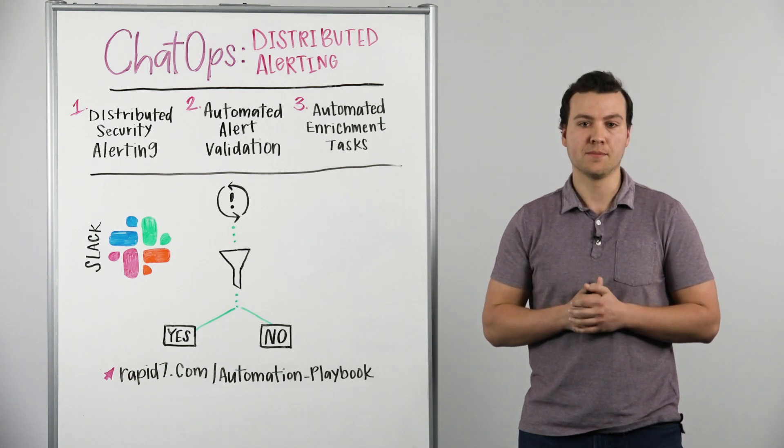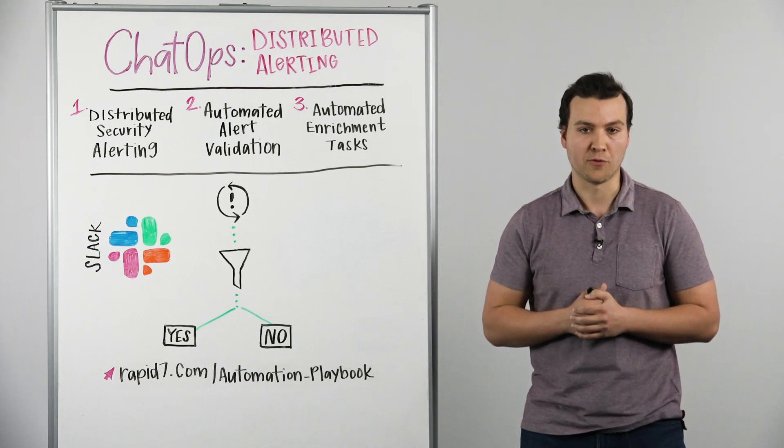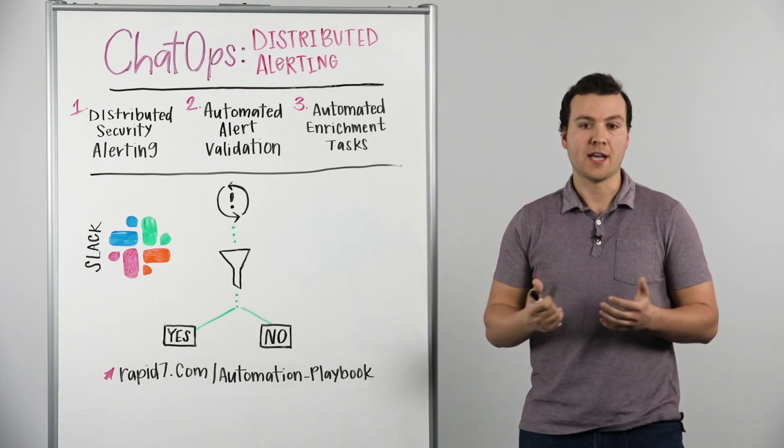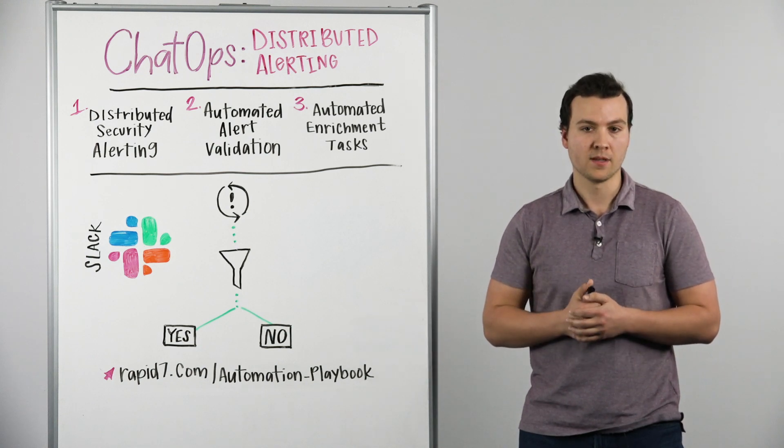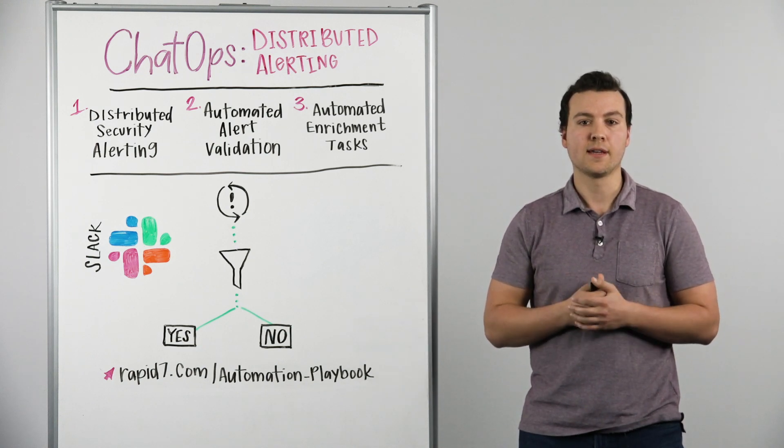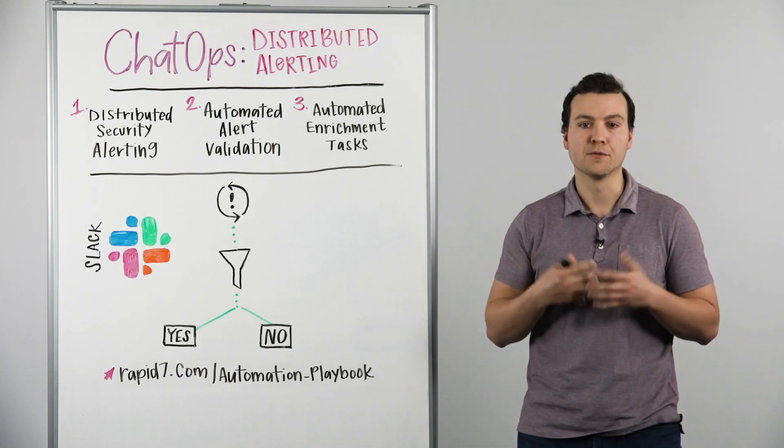Let's imagine an alert comes in during off hours that a user is accessing a system that they've never logged into before. With automation-powered ChatOps, that user can be instantly messaged to confirm this event. And if they do not, then their account can be suspended until a security analyst is able to sign in and review this incident.